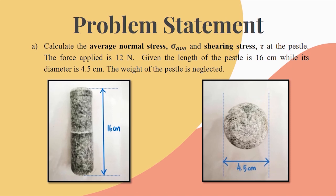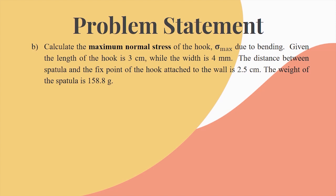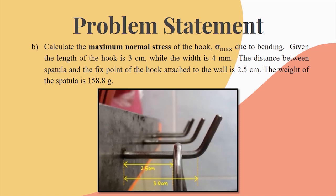After Timmy hung the spatula back to the kitchen hook, we can calculate the maximum normal stress of the hook due to bending. Given the length of the hook is 3 cm while the width is 4 mm. The distance between the spatula and the fixed point of the hook attached to the wall is 2.5 cm. The weight of the spatula is 158.8 grams.